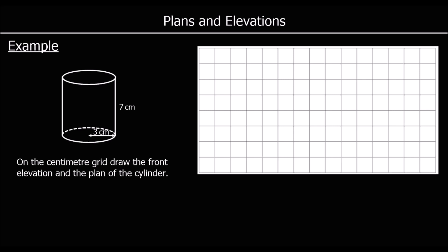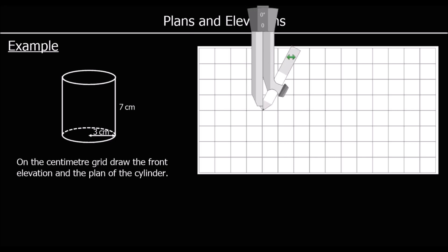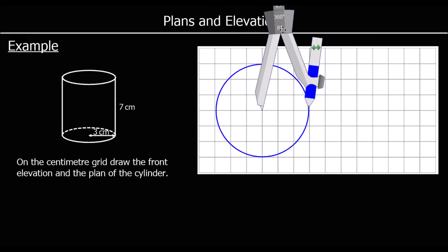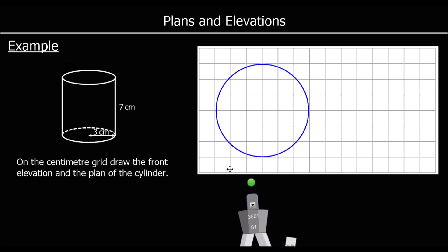This time we've been given the shape and we need to draw the front elevation and the plan. We've got a cylinder. Looking from the top down, the plan is going to be a circle with a radius of 3, so a diameter of 6. We grab a compass, extend the radius to 3 centimetres using the centimetre grid, and draw the circle. There is our circle with a radius of 3 centimetres.